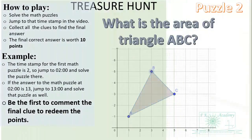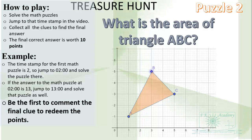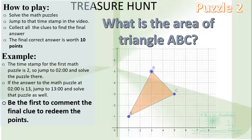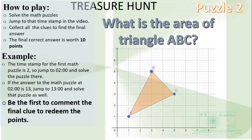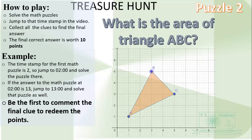This is your second math puzzle. What is the area of the triangle ABC? If the answer you get after solving is, let's say, 9, you click 09.00 — that timestamp — to find the next math puzzle to solve, and update your answer.